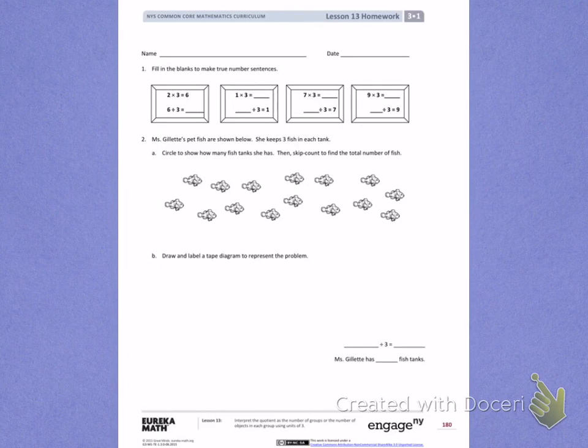This is Module 1, Lesson 13. Today's objective was to interpret the quotient as the number of groups or the number of objects in each group using units of 3.